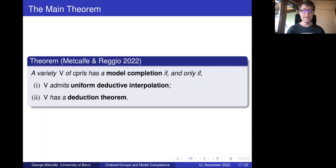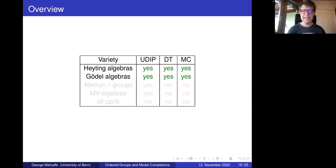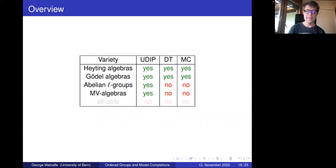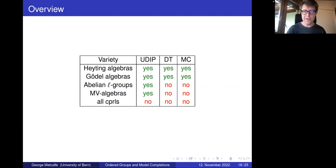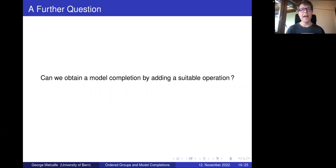We've arrived at the main theorem: a variety of CPRLs has a model completion if and only if it admits uniform deductive interpolation and has a deduction theorem. To summarize for the varieties we've considered: Heyting algebras and Gödel algebras have all three properties — uniform interpolation, deduction theorem, and a model completion. Abelian L-groups have uniform deductive interpolation but lack a deduction theorem and therefore lack a model completion. Similarly for MV algebras. For the variety of all CPRLs, all three properties fail.